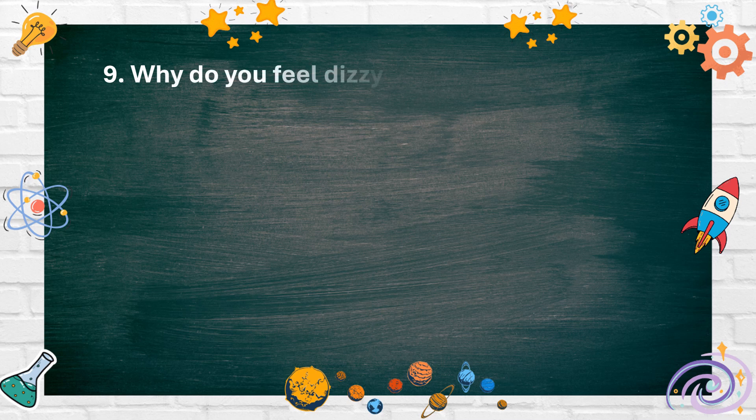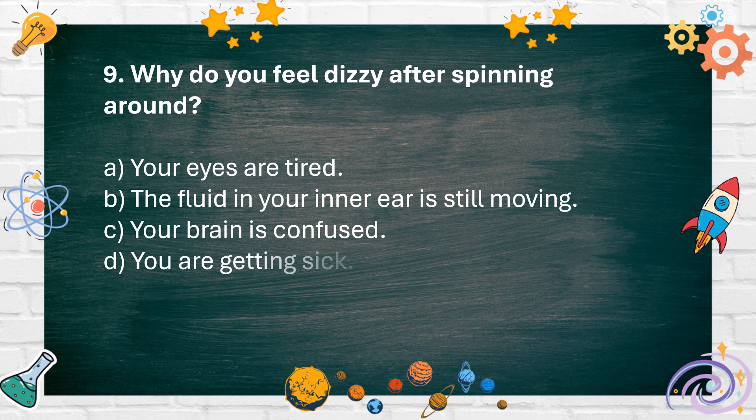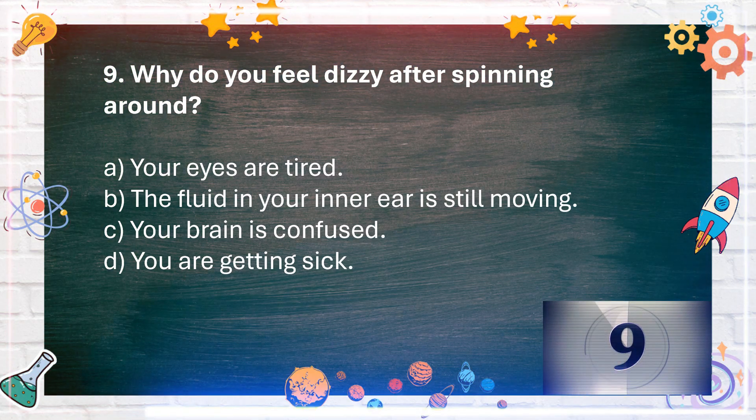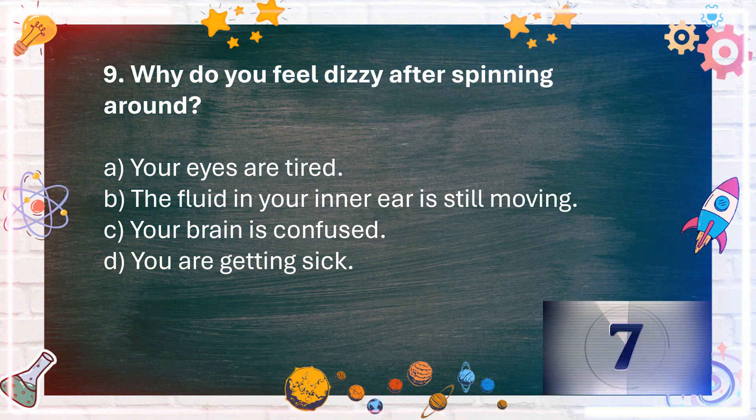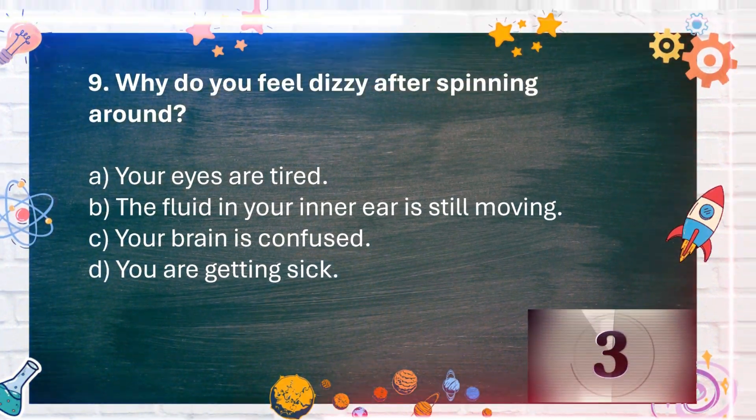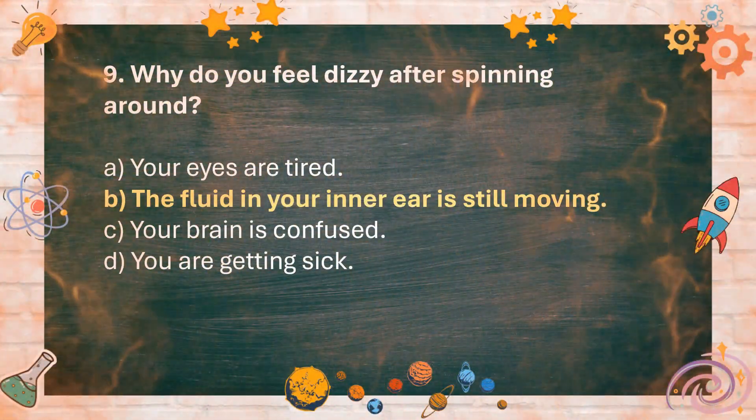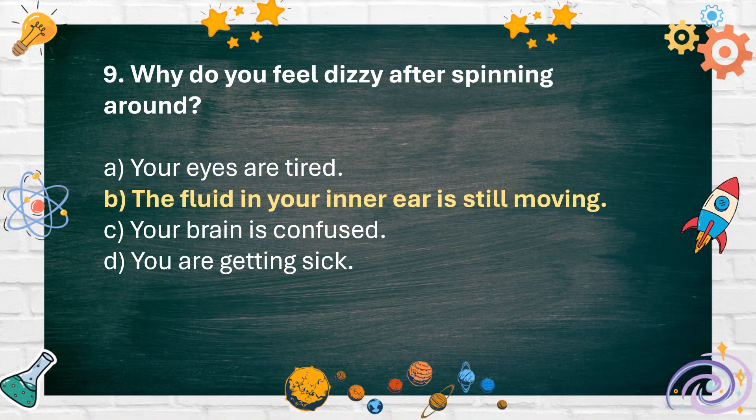Number 9: Why do you feel dizzy after spinning around? A. Your eyes are tired. B. The fluid in your inner ear is still moving. C. Your brain is confused. D. You are getting sick. The answer is B. The fluid in your inner ear is still moving.